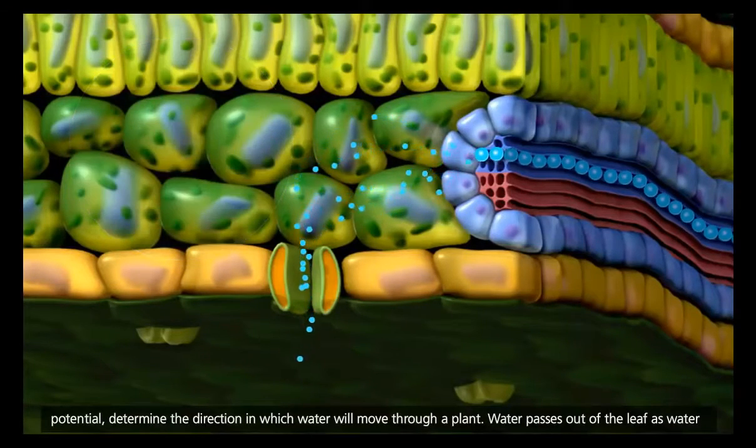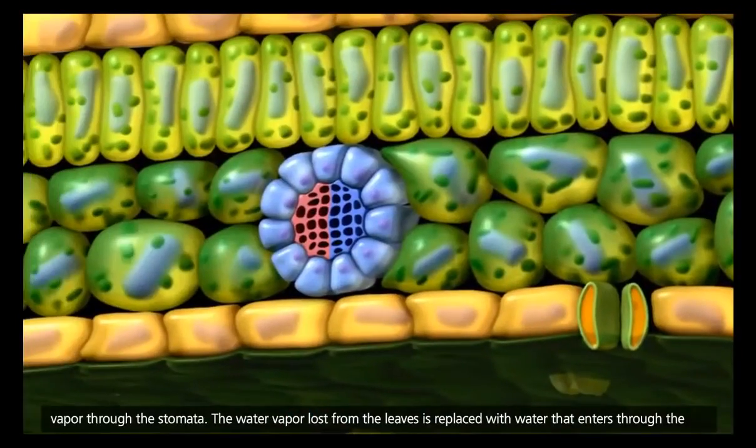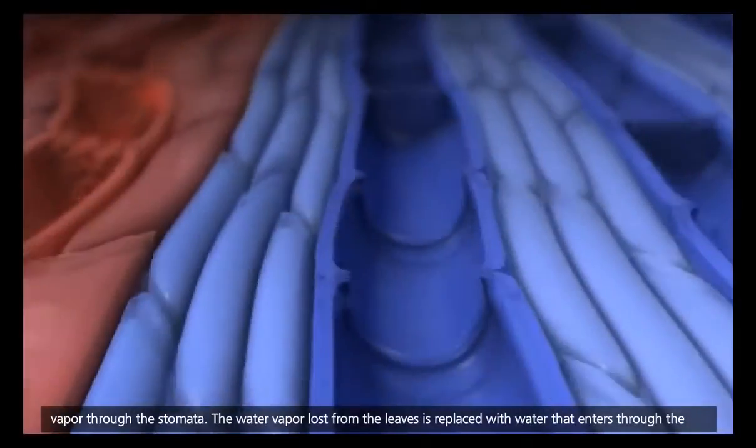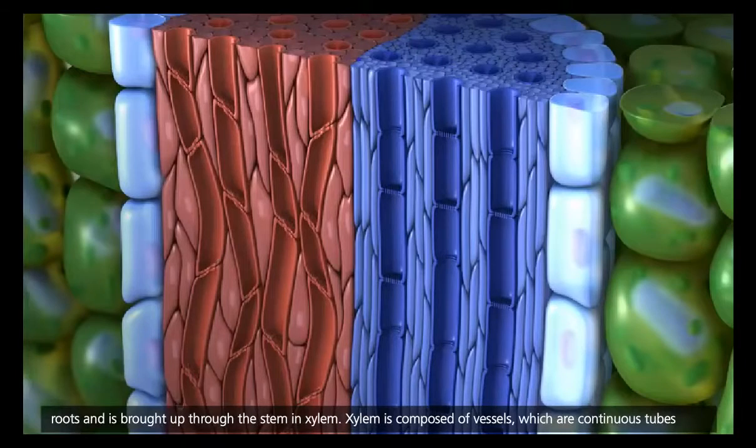Water passes out of the leaf as water vapor through the stomata. The water vapor lost from the leaves is replaced with water that enters through the roots and is brought up through the stem in xylem.